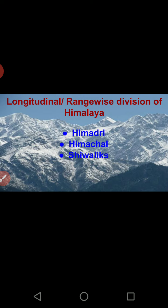The Himalayas are divided range-wise into three major ranges: Himadri, Himachal, and Shivaliks. The northernmost range is Himadri, the central range is Himachal, and the southernmost range touching the northern plains is the Shivaliks. These ranges also differ in height — Himadri is the highest, Himachal lesser, and Shivaliks the least.